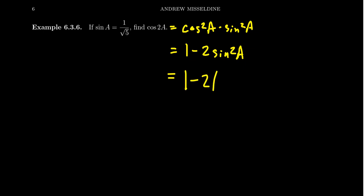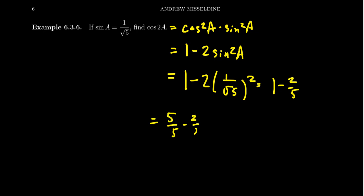We get 1 minus 2 times (1 over the square root of 5) squared. Squaring 1 over root 5 gives one-fifth, so we have 1 minus 2 fifths. Thinking of 1 as five-fifths and subtracting two-fifths gives us three-fifths. So cosine of 2a equals 3/5. We were able to compute that without using any information about cosine by choosing the most convenient form.